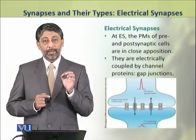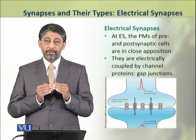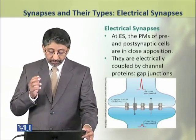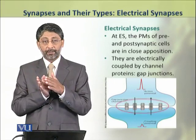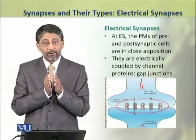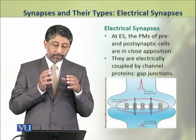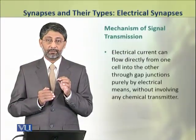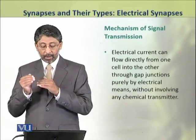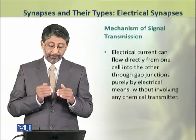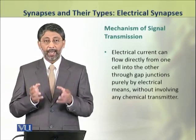We shall discuss electrical synapses in detail. At the electrical synapses, the plasma membranes of pre- and post-synaptic cells are in close apposition. They are electrically coupled through the gap junction proteins. The electric current can flow directly from one cell into the other through the gap junction proteins purely by electrical means, without involving any chemical transmitter.